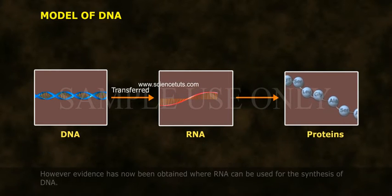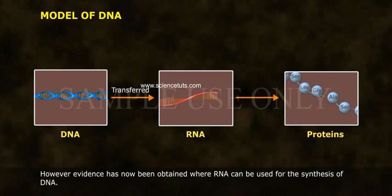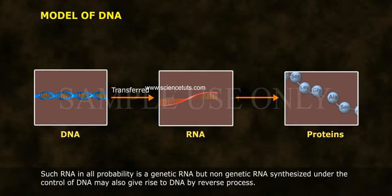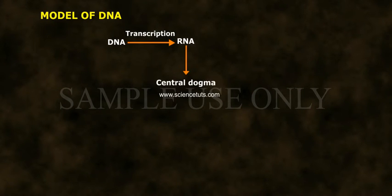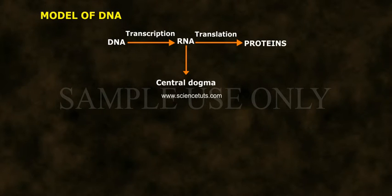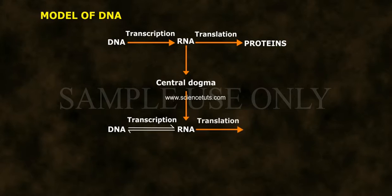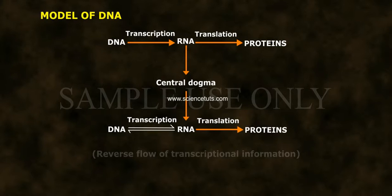to proteins. However, evidence has now been obtained where RNA can be used for the synthesis of DNA. Such RNA in all probability is a genetic RNA, but non-genetic RNA synthesized under the control of DNA may also give rise to DNA by the reverse process. The flow is: DNA → transcription → RNA → translation → proteins, with reverse flow of transcriptional information also possible.